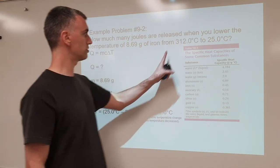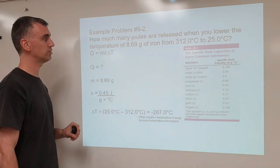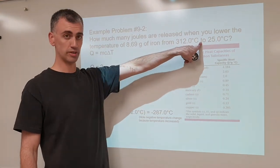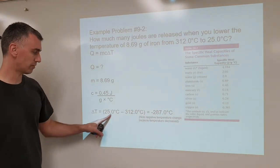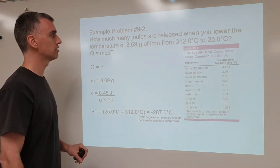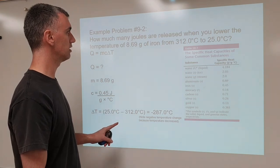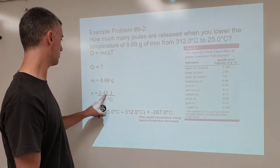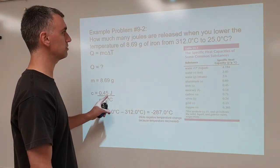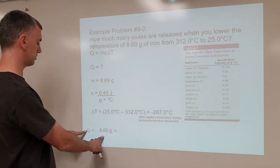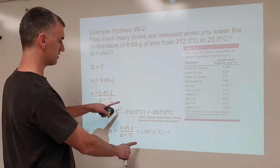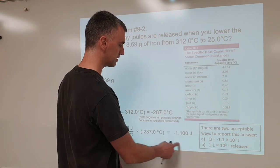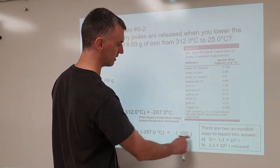For delta T, subtract the two numbers. Then think: is the temperature going up or down? It says when you lower the temperature, meaning the temperature is going down, which means you need a negative delta T. Subtract them in whatever order makes the answer turn out negative. The negative delta T, along with the mass and specific heat capacity, makes the whole answer turn negative. When you round to two sig figs, it comes out over a thousand, so report it in scientific notation as negative 1.1 times 10 to the third joules.